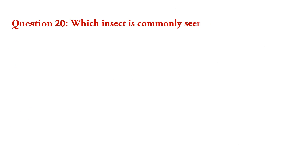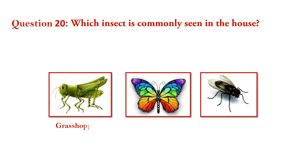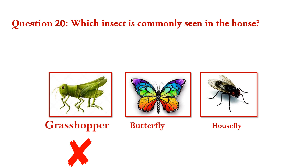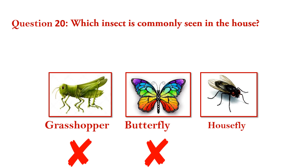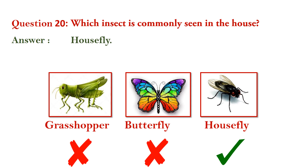Question number 20. Which insect is commonly seen in the house? Grasshopper — wrong. Butterfly — wrong. Housefly — right. Answer is housefly.